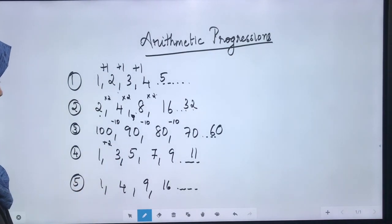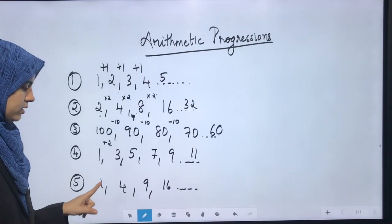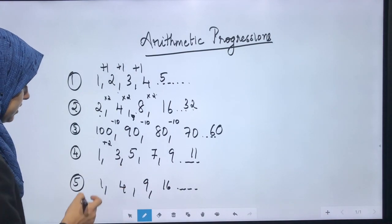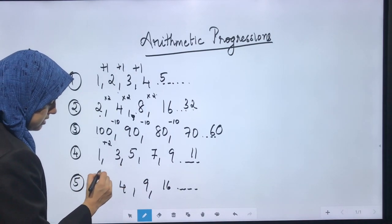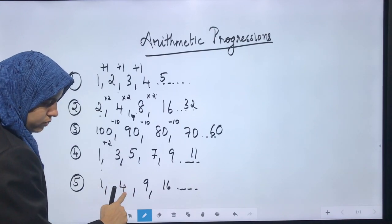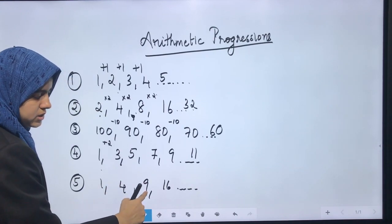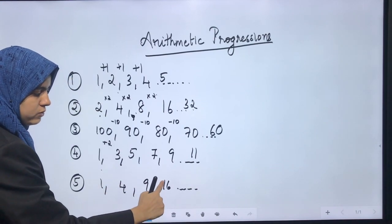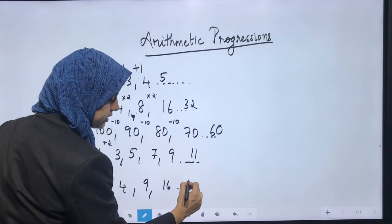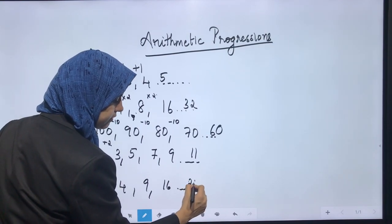In the fifth example: 1, 4, 9, 16. These are 1 squared, 2 squared, 3 squared, and 4 squared. The next term will be 5 squared, which is 25.